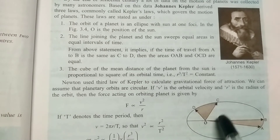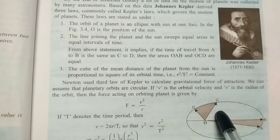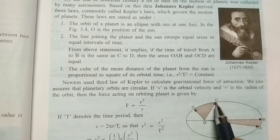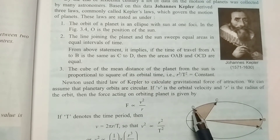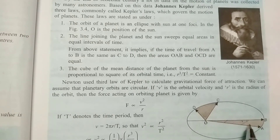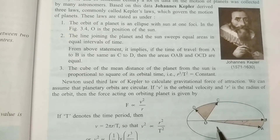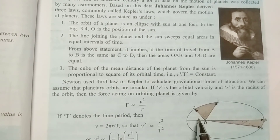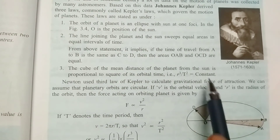The second law states: the line joining the planet and the Sun sweeps out equal areas in equal intervals of time. Suppose C is the position of the planet at any instant — after one hour it has moved, covering a certain area. Similarly from A to B in one hour, the area covered will be the same. The third law states that the cube of the mean distance of the planet from the Sun is proportional to the square of its orbital time period, so R cube by T square is constant.